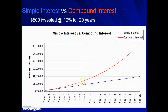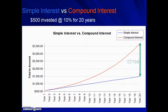The first couple of years the interest is about the same, but then in the fourth year the compound interest starts pulling away. Over twenty years, you can see how much more the compound interest account — starting at the same value with the same interest rate — ends up being: a gain of almost twenty-two hundred dollars, simply by having the interest compounded versus simple interest.